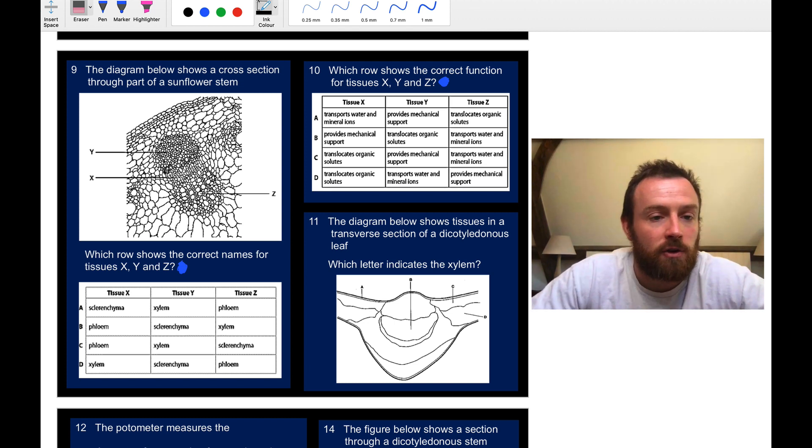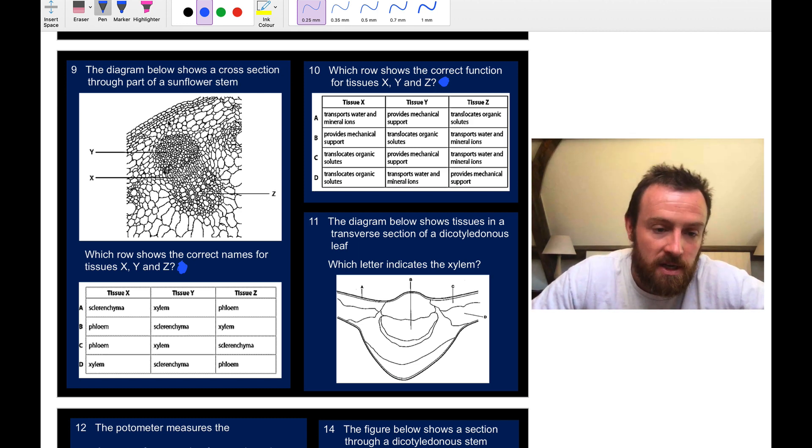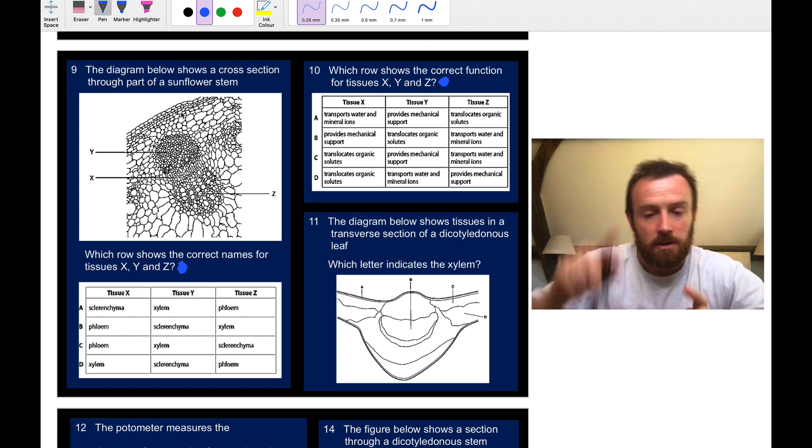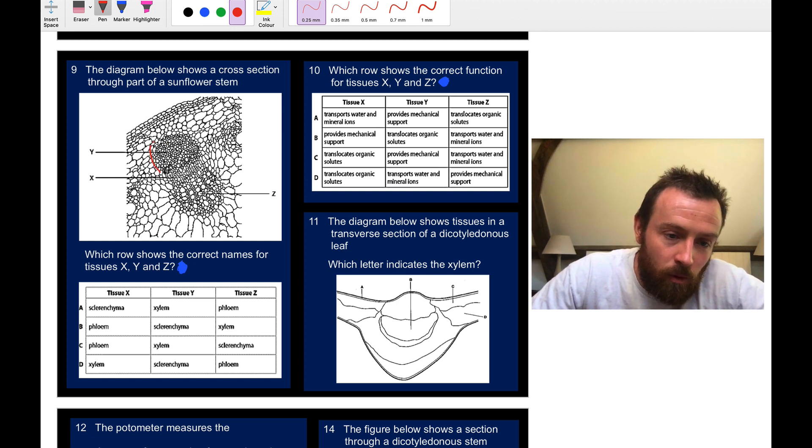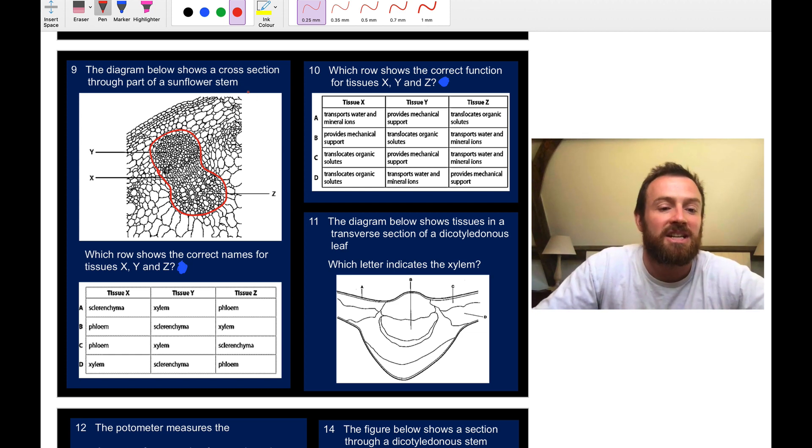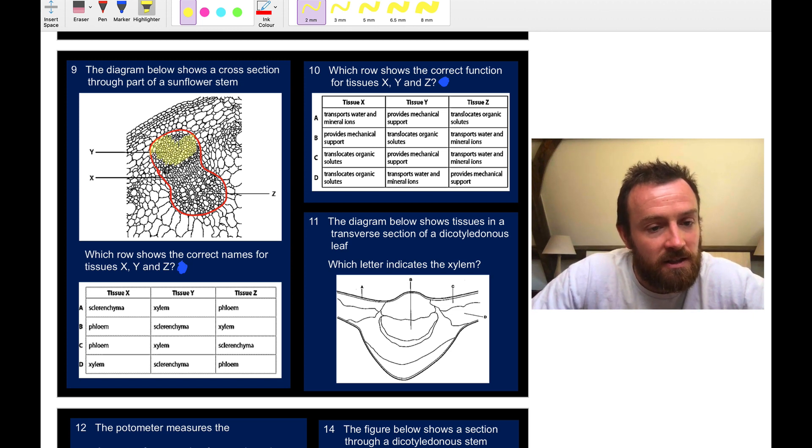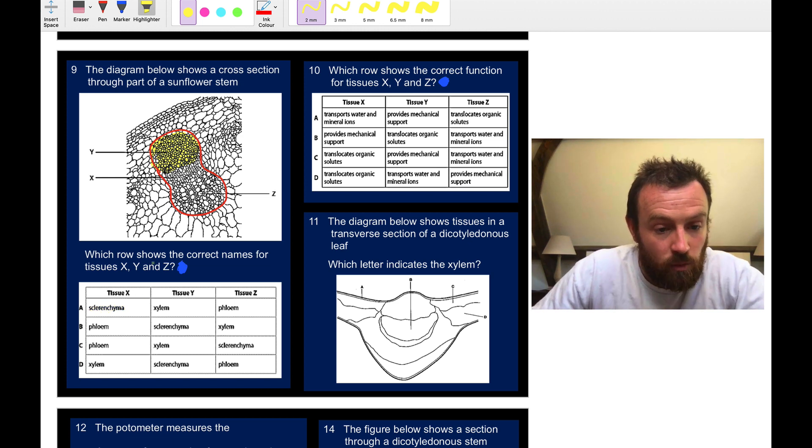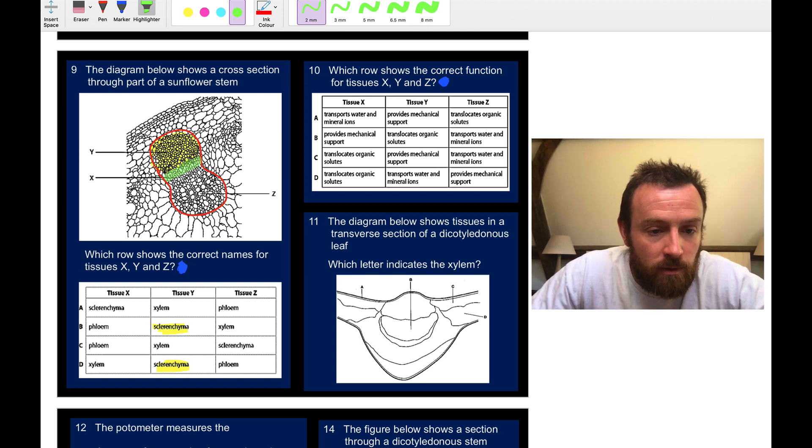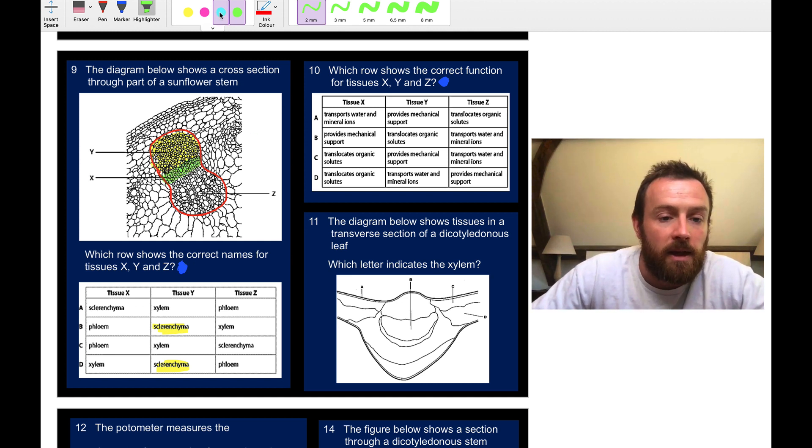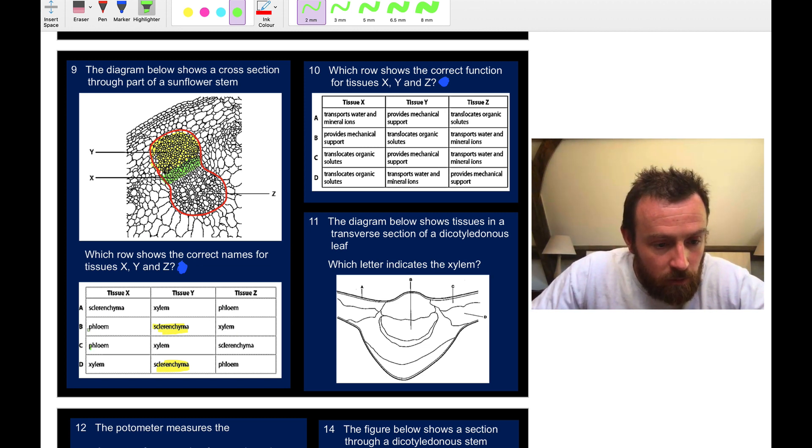Question 9, 10, 11: if you need to do these questions, pause the video and do them now. For question nine, we're looking at the cross-section of a sunflower stem, so a non-woody plant where we've got vascular bundles in the stem. They're kind of arranged around the stem in little bunches. They almost look a bit like a figure eight. We have distinct tissues in there. I always remember that the phloem is on the outside and the xylem is on the inside, but there's also another tissue which is called sclerenchyma, which is support tissue. The support tissue is on the outside, so tissue Y is sclerenchyma.